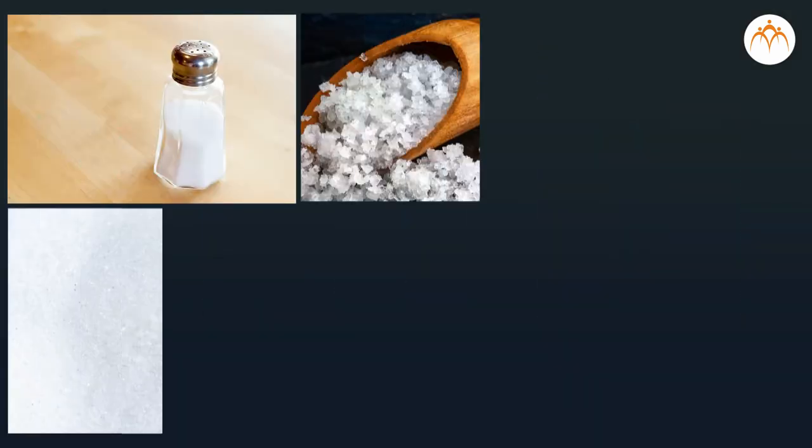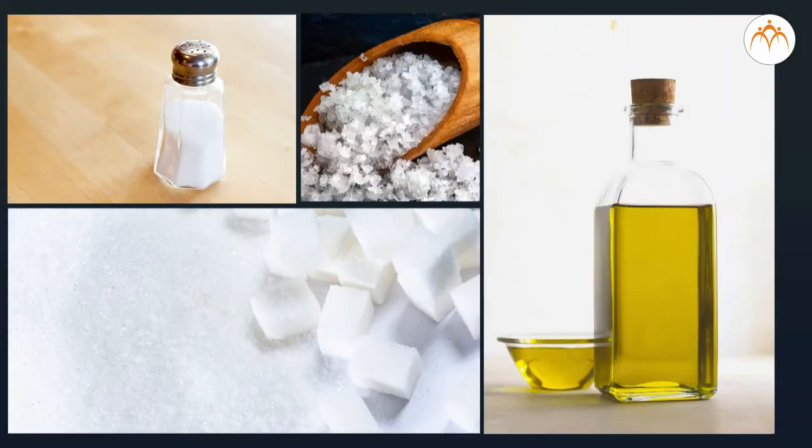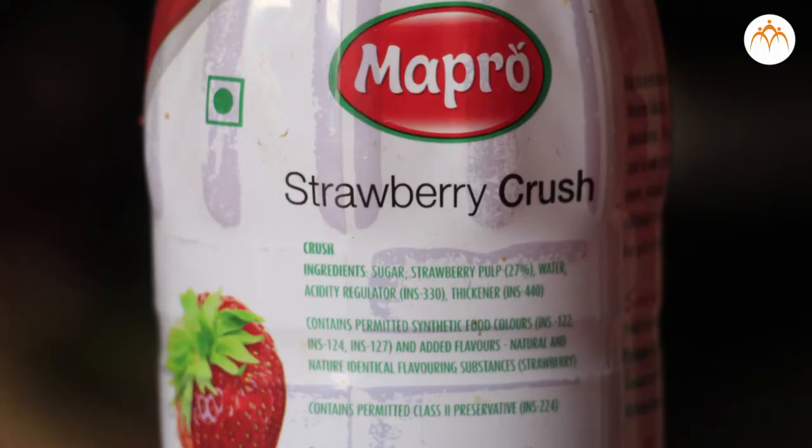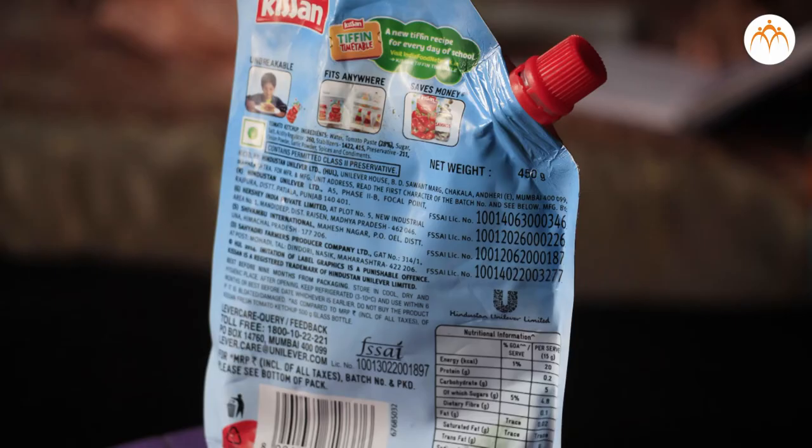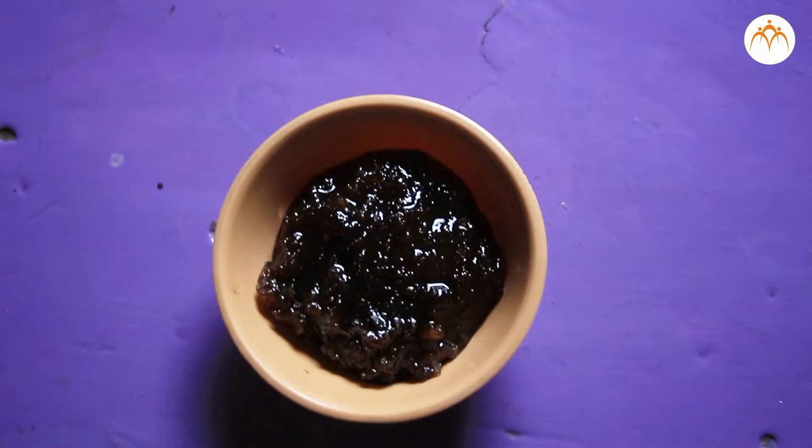Another method of food preservation is addition of preservatives. There are two types of preservatives: natural and artificial. Salt, sugar, and oil are common natural preservatives even used in the house. Can you tell me names of some homemade food items in which sugar or salt or oil are added? Pickles, jams, jellies, ketchup, muramba, etc. are preserved by adding preservatives.